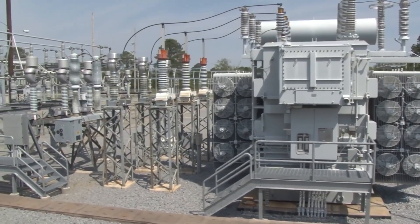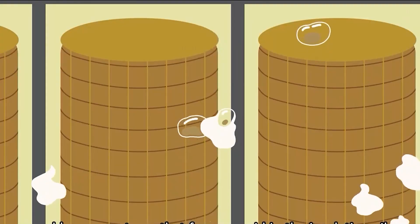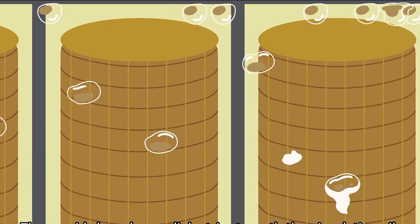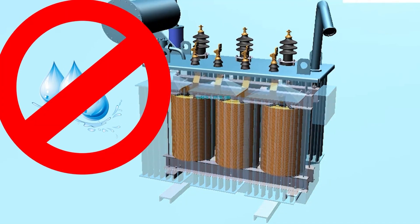In turn, the service life of paper insulation is greatly influenced by water, which contributes to the destruction of cellulose molecules and a decrease in electrical strength. Therefore, throughout the entire life cycle of the transformer, water from the winding insulation must be periodically removed.